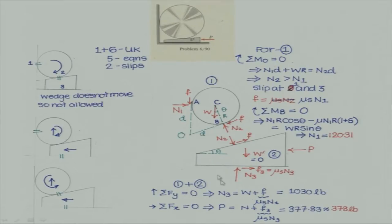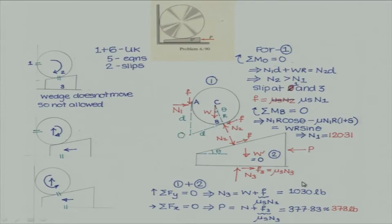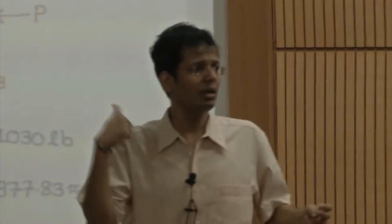Now, what you do is: you know N1, you know F. A very simple way to do this problem is to look at the full free body diagram — the cylinder plus wedge together. The full system is also in equilibrium. For equilibrium of this complete system, F plus W will be equal to N3. But we already know F which is equal to μs·N1. So we immediately know N3. Once we know N3, there is slippage at the bottom, so F3 = μs·N3, and we know also the friction. The only unknown in the system is P. For this complete free body diagram, take equilibrium in the x direction: N1 plus F3 will be equal to P, and you immediately see that the force P required to move the block inwards is approximately equal to 377.8 or 378 pounds.